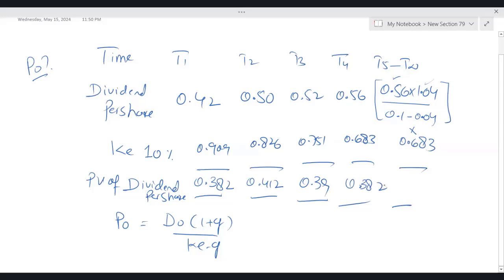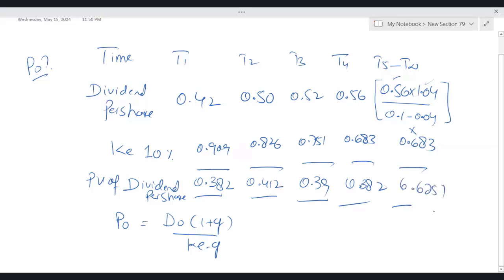0.56 multiplied by 1.04 divided by 0.06 (because in the denominator, from 0.1 when you deduct 0.04 you get 0.06), I'm getting 9.7, multiplied by 0.683, I'm getting 6.6251. Simply add all of them and it will give you P0.